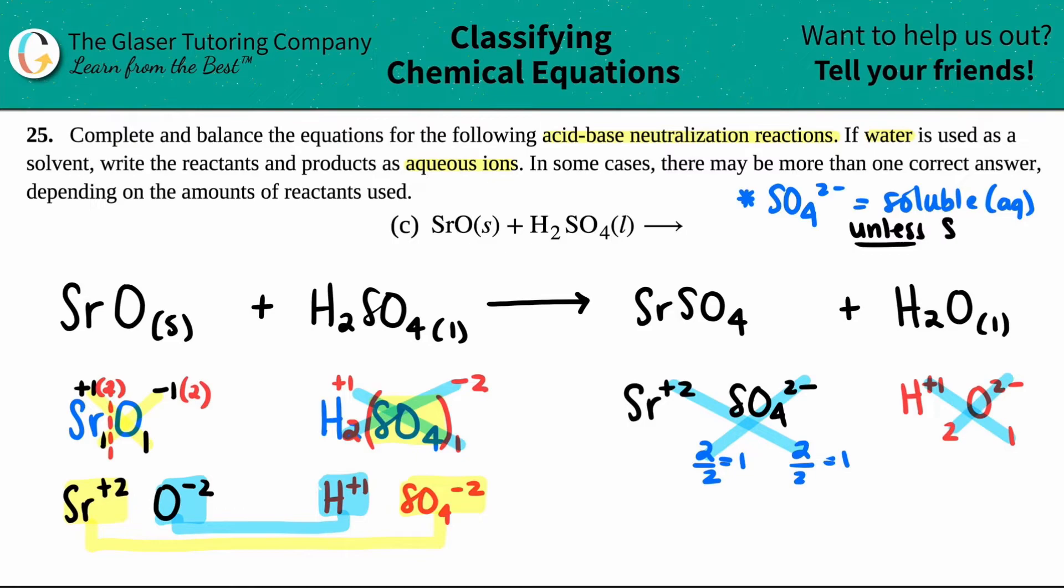Generally, sulfates are aqueous, so they're usually soluble, which means that they're aqueous, unless they're bound with some ions. The ions are Sr²⁺, Ba²⁺, strontium, barium, lead, Pb²⁺, and then Hg, mercury. Sulfates are usually soluble, unless they're bound with an exception. If they are bound with an exception, they are a solid. And since I have strontium, it is a solid.